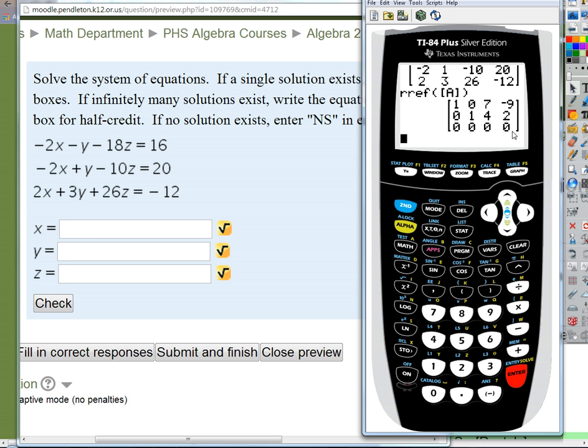Now, the other way it could look, if it's the other type of answer, it would be like zeros, all zeros, and then a one, and that would be false, and that's telling you that it's no solutions.